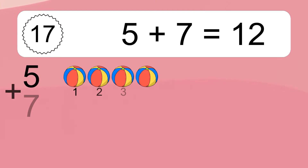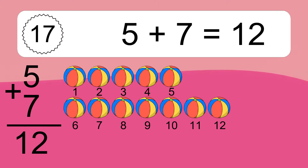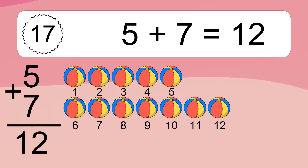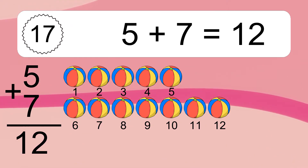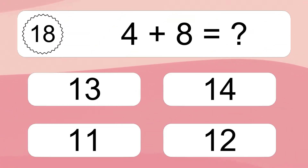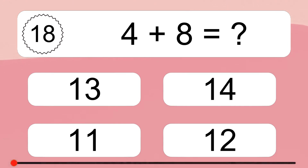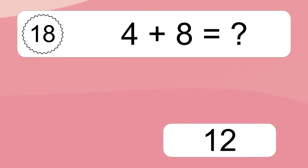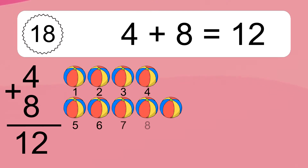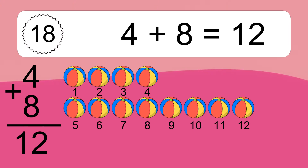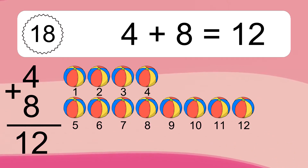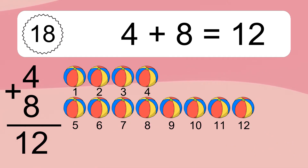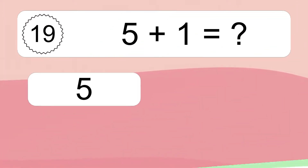5 plus 7 equals what? Let's count it. 1, 2, 3, 4, 5, 6, 7, 8, 9, 10, 11, 12.